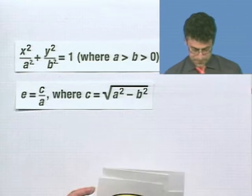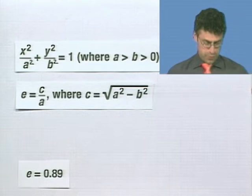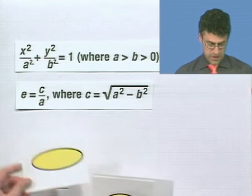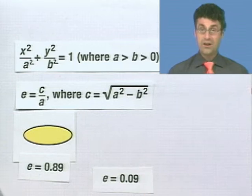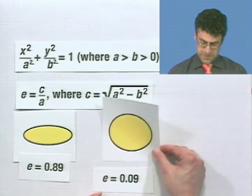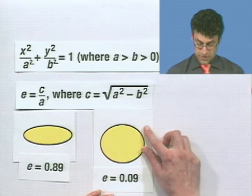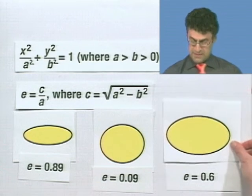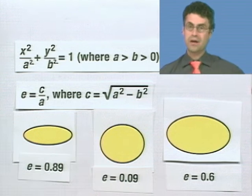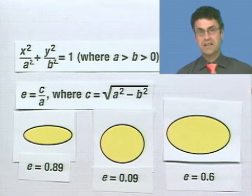For example, if e were to be something like 0.89, very close to 1, we'd expect some kind of very exaggerated ellipse. Whereas if we had something like 0.09, that's actually very close to 0, we'd expect something that looks almost like a circle. And if we're looking at something like 0.6, that's kind of in the middle. This eccentricity allows us to measure, in some sense, the pinchedness. Let me show you an example.